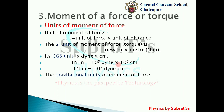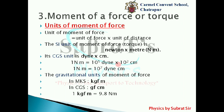The gravitational units of moment of force are: in MKS, kgf multiplied by meter; in CGS, gf multiplied by centimeter. One kgf·m equals 9.8 N·m, and one gram-force·centimeter equals 980 dyne·centimeter.